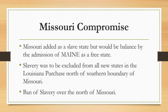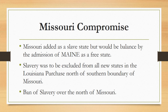Henry Clay, a leading congressman, played a crucial role in brokering a two-part solution known as the Missouri Compromise. The key points were: first, Missouri would be admitted to the Union as a slave state, balanced by the admission of Maine as a free state, which had long wanted to separate from Massachusetts. Second, slavery was to be excluded from all new states in the Louisiana Purchase north of the southern boundary of Missouri. Third, there was a ban on slavery north of Missouri.